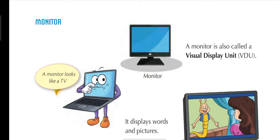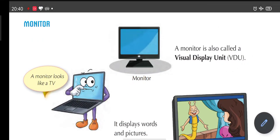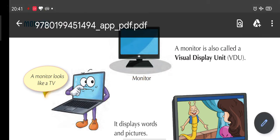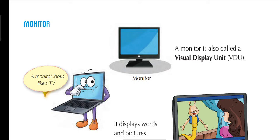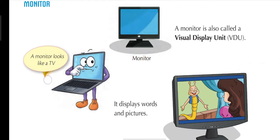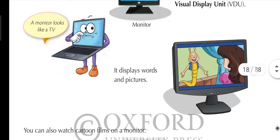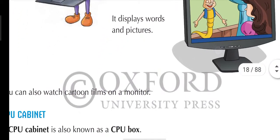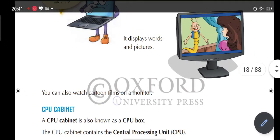Now talking about the monitor — the first device is the monitor. It is also called a Visual Display Unit, or VDU. A monitor looks like a TV. It displays words and pictures. You can see words which you write, or pictures and images or photos on the monitor.